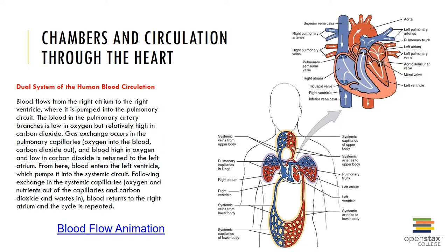Blood flows from the right atrium to the right ventricle via the tricuspid valve, and from the right ventricle enters the pulmonary artery on its way to the pulmonary circuit to become reoxygenated. It then returns to the heart into the left atrium via the pulmonary veins, goes through the bicuspid or mitral valve into the left ventricle, and from there into the aorta.